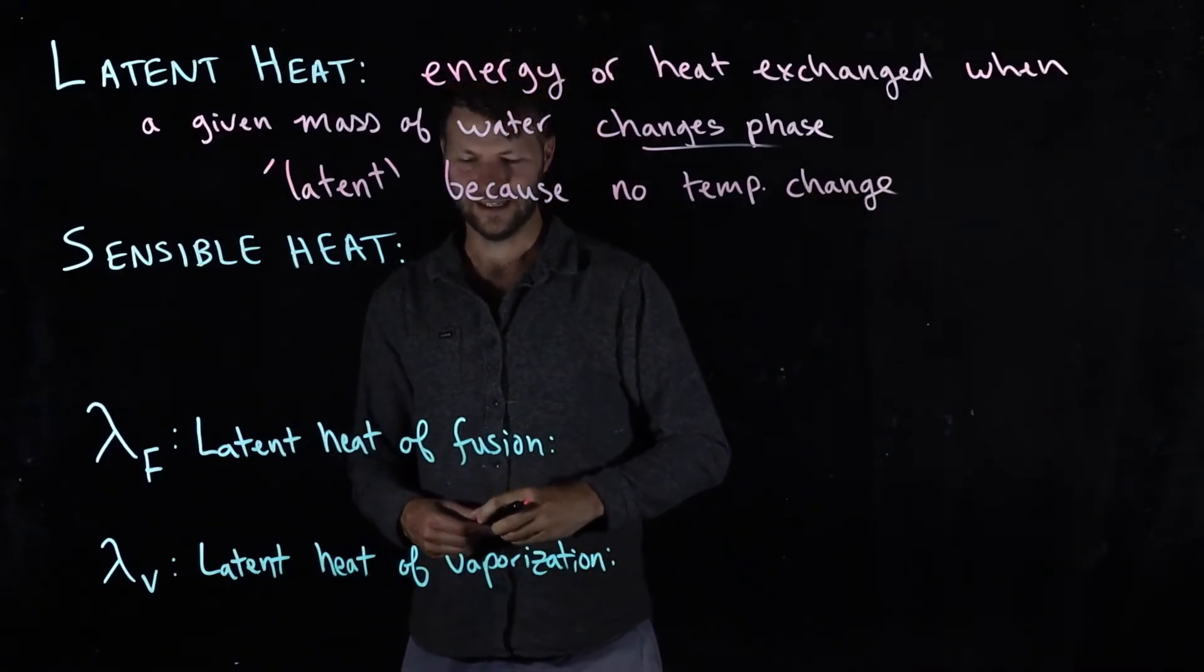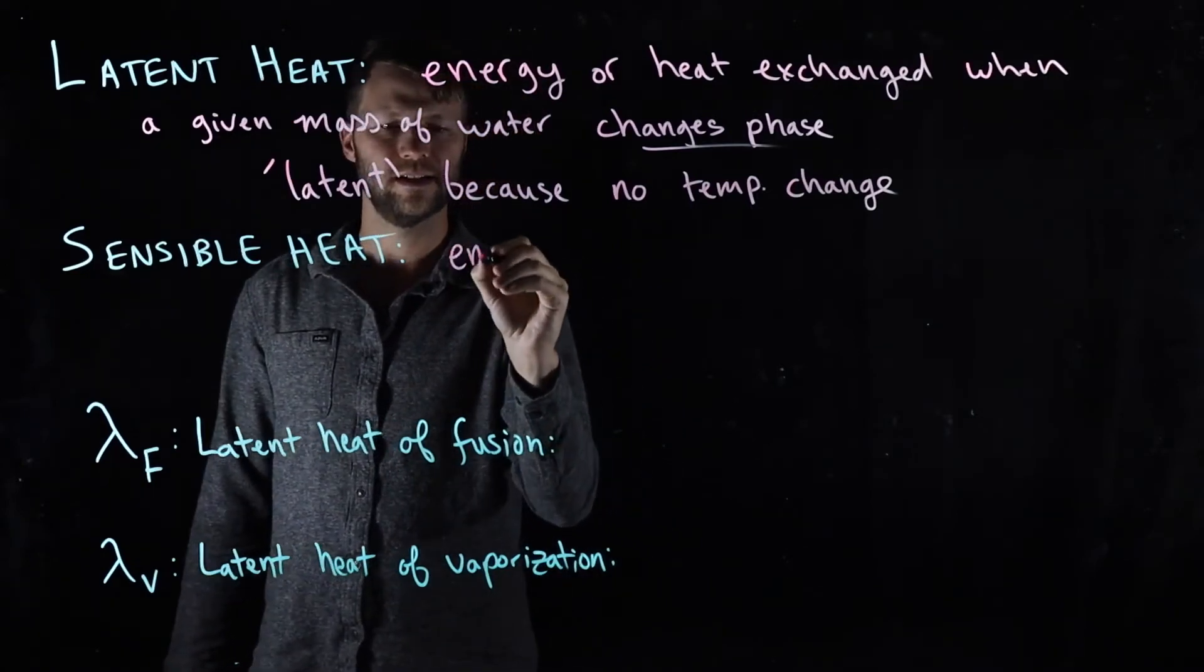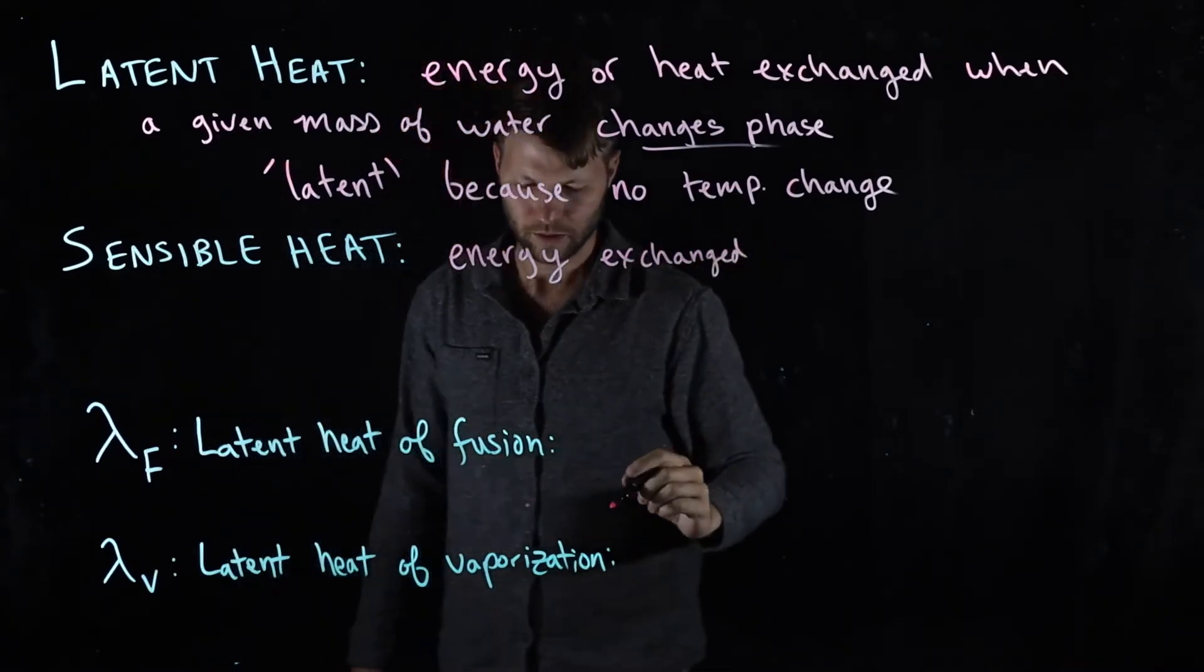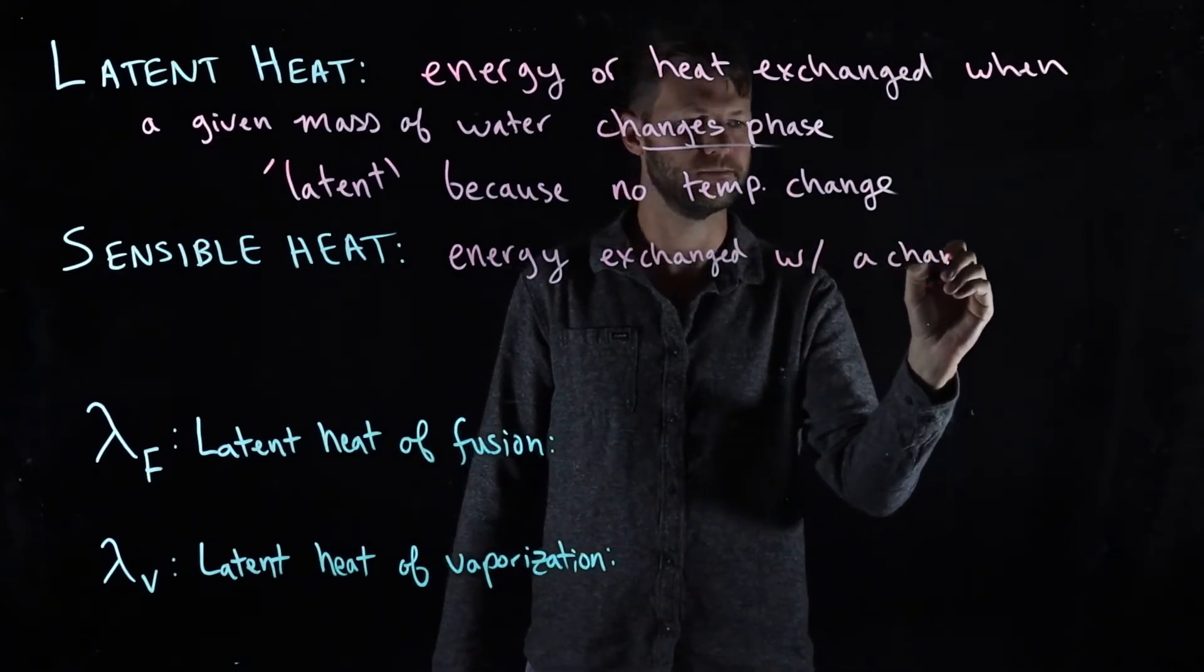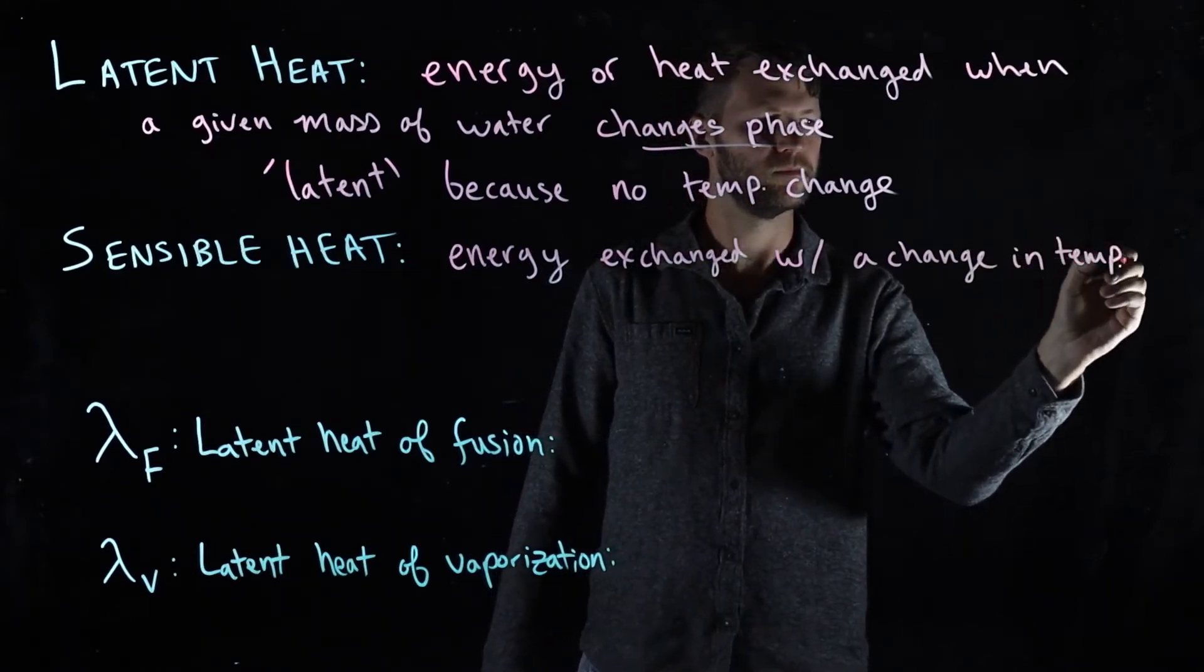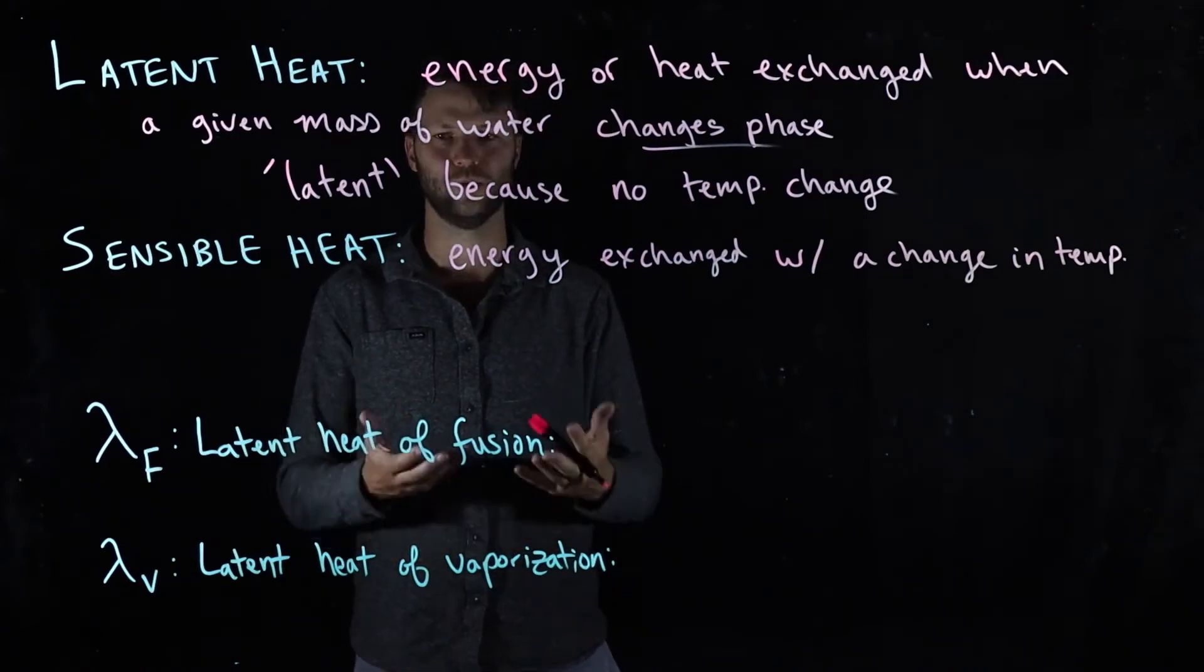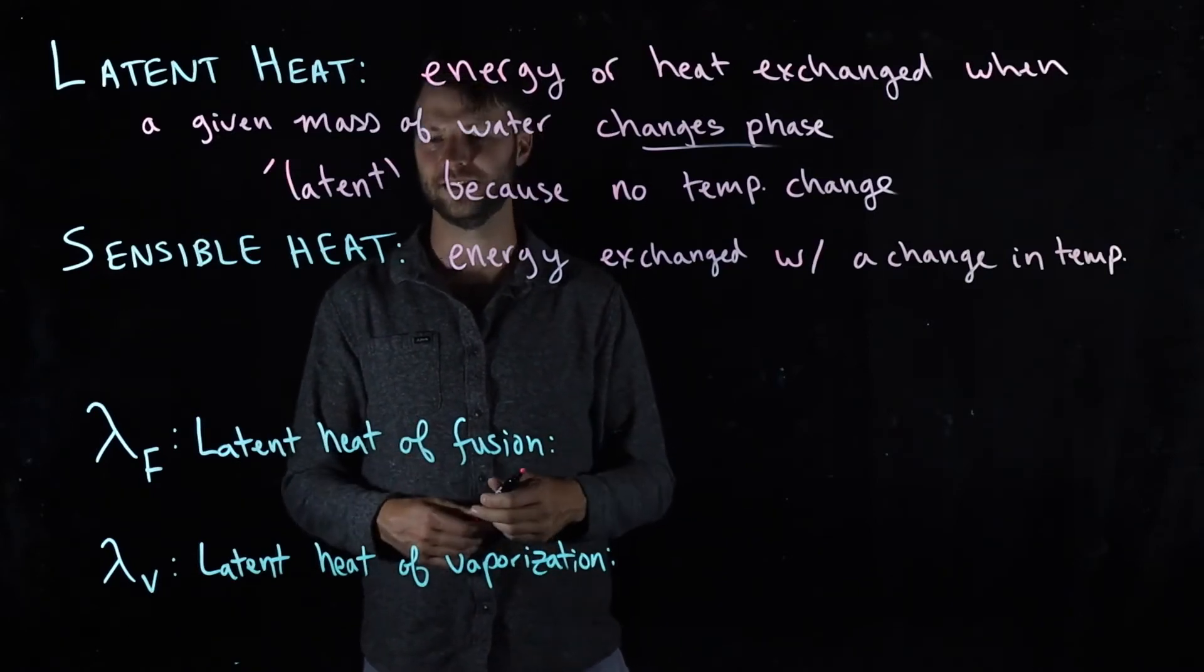In contrast, sensible heat is a change in temperature. So if there's a puddle of water on the street and it's 15 degrees Celsius and you're adding heat to it, it's going to warm up and you're going to be able to measure with a thermometer that it is actually increasing in temperature.